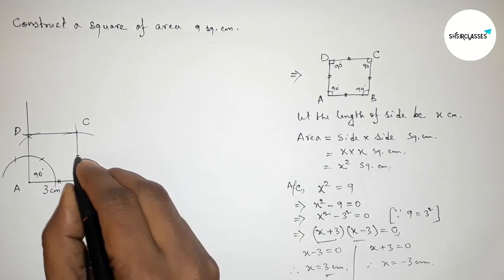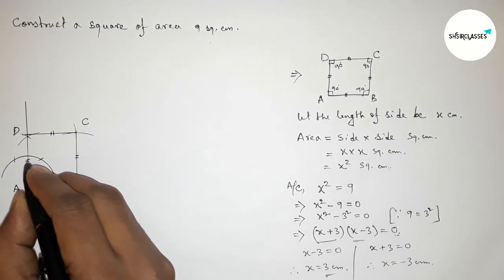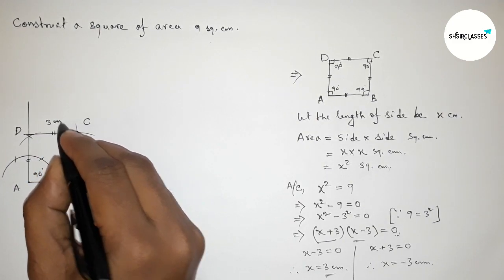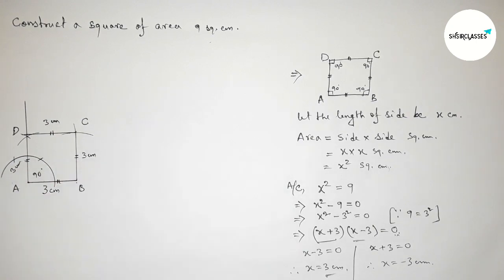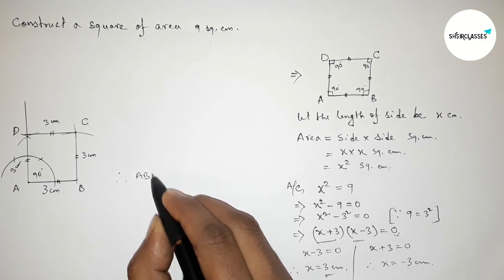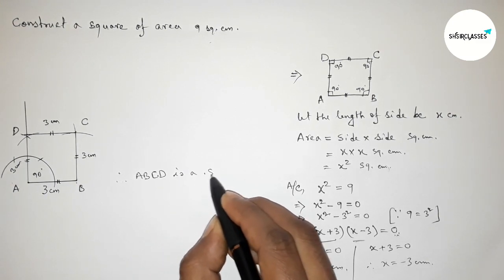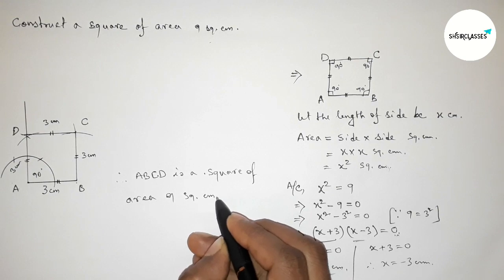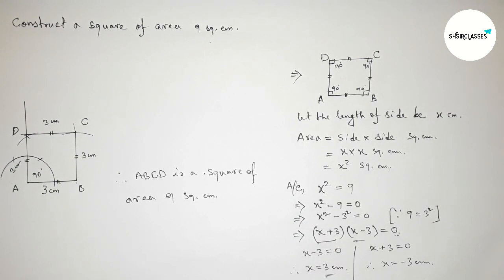All sides are equal — AB, BC, CD, and DA are each 3 centimeters. Therefore, ABCD is a square of area 9 square centimeters. That's how you construct a square of area 9 square centimeters. Thanks for watching — if this video was helpful, please share it with your friends.